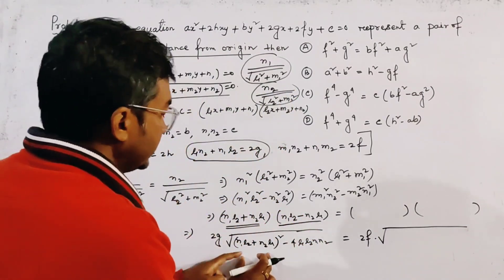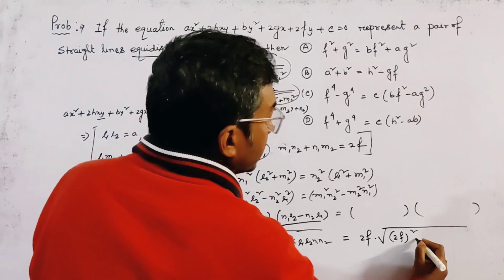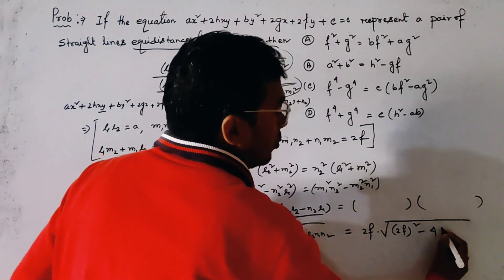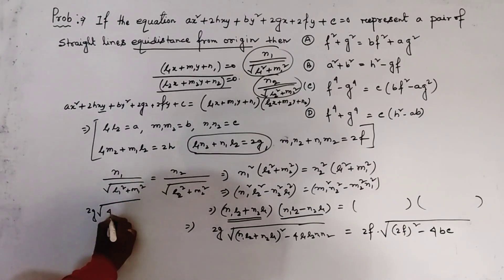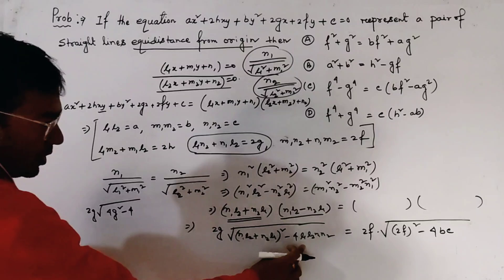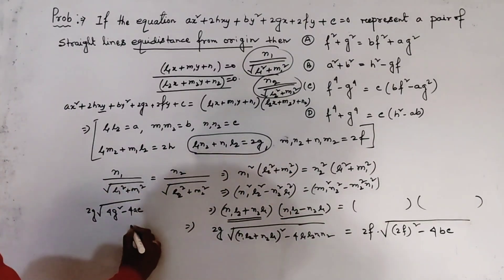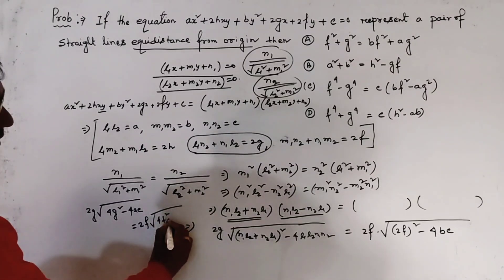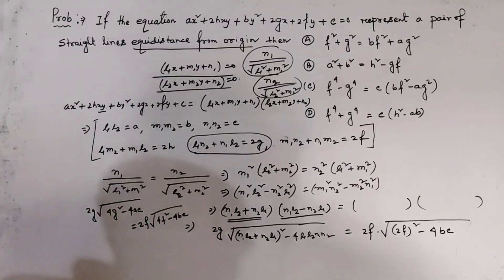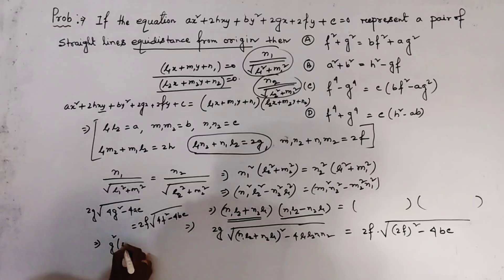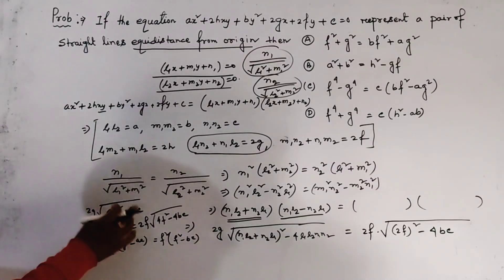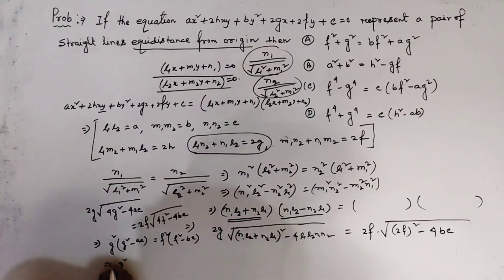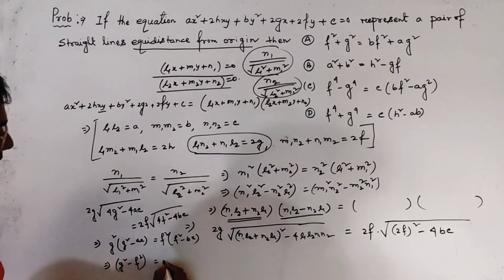The second term on the right side is 4M1M2N1N2, which equals 4bc. Substituting on the left side: 2G times root(4G squared minus 4ac), and on the right side: 2F times root(4F squared minus 4bc). Squaring both sides: G squared times (G squared minus ac) equals F squared times (F squared minus bc). So G to the power 4 minus G squared times ac equals F to the power 4 minus F squared times bc.